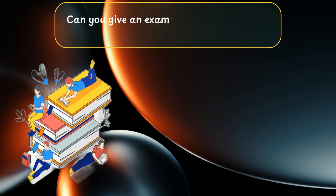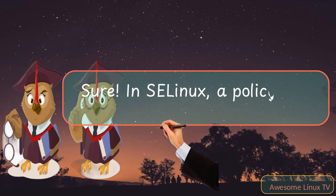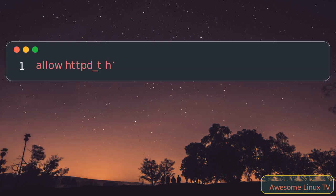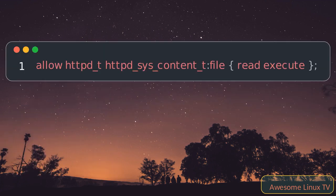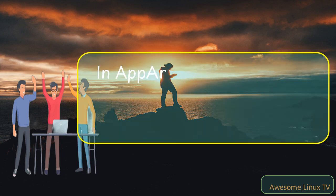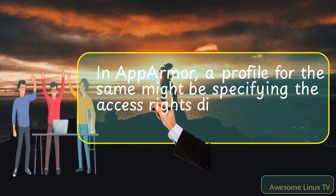Can you give an example of a policy in both systems? In SELinux, a policy might look like this — it allows the HTTPD process to read and execute files labeled as httpd_sys_content_t. In AppArmor, a profile for the same might specify the access rights directly to the file paths.